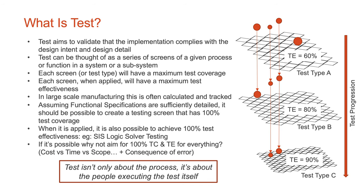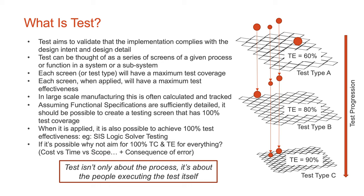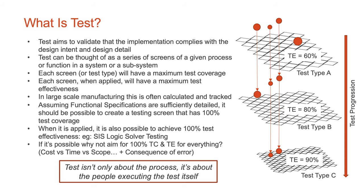But what is test exactly? Test aims to validate that the implementation has complied with the design intention, and all of the details in that design meet the requirements that were set and agreed at the beginning. Test can be thought of as a series of screens — screens like mesh of different sizes. Each screen or test type will have a maximum test coverage of defects, or bugs if you prefer, that it can find. And each of those will test a given process or function in the system or subsystem that you've designed and developed. So each screen when applied will have that test effectiveness.